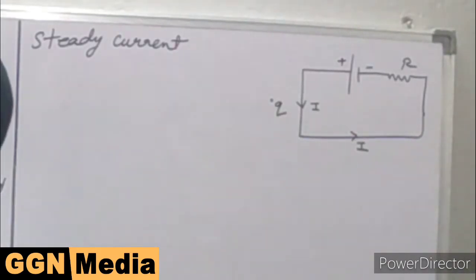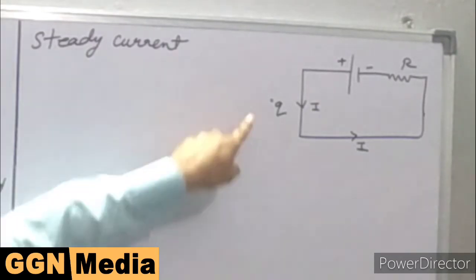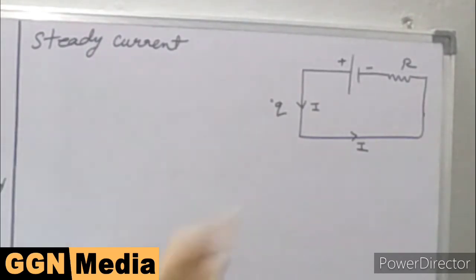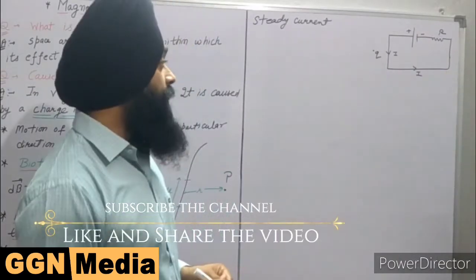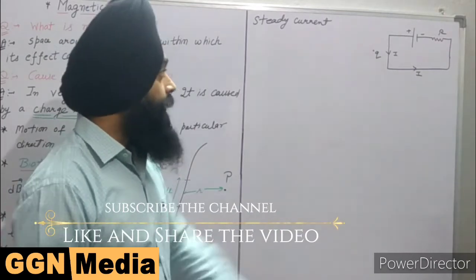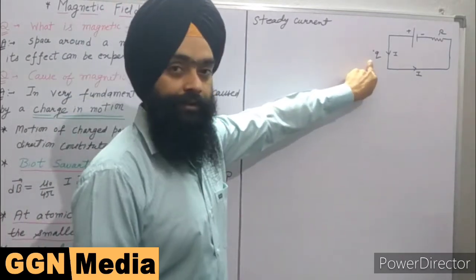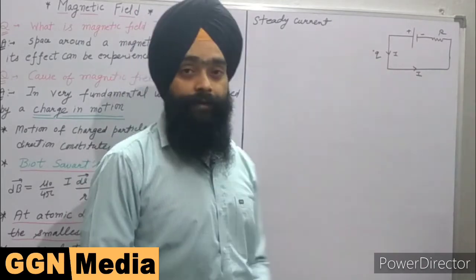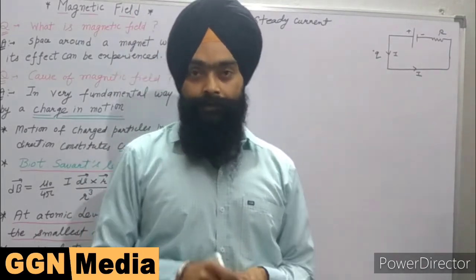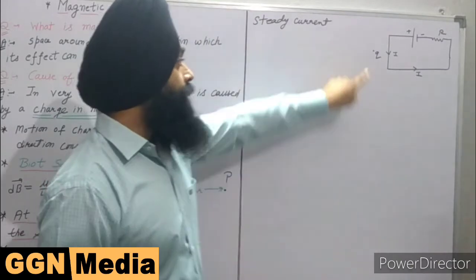If I put a charge q here which is stationary, then we will see that no field is acting on this charge. When this charge is stationary, no field acts on it. But if I move this charge, experimentally it has been shown that whenever the charge is moving, a field is experienced by this charge and that field is called magnetic field.